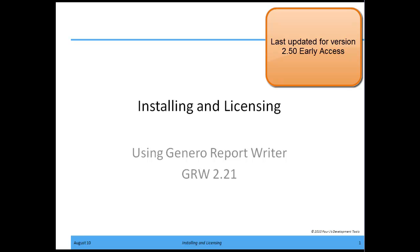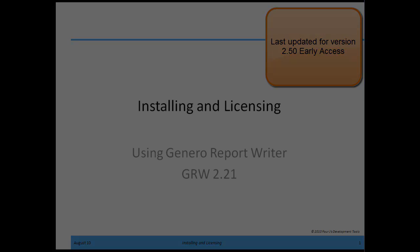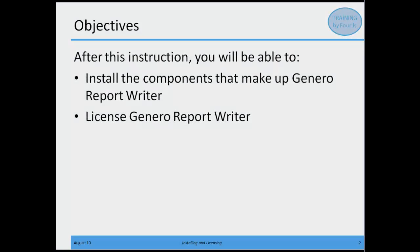Welcome to Module 2, Installing and Licensing Using GRW 2.21. At the end of this instruction, you're going to be able to install the components that make up the Genero Report Writer, and you'll be able to license the Genero Report Writer. We won't have the opportunity to actually walk you through a full-on Windows, Linux, or Unix installation, but I want to make sure you understand what's involved with both the installation and the licensing.